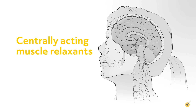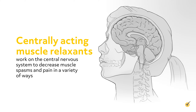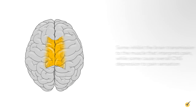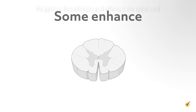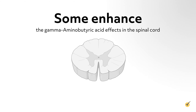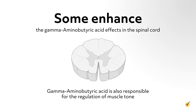Centrally acting muscle relaxants work on the central nervous system to decrease muscle spasms and pain in a variety of ways. Some inhibit the brain transmission to the muscle that interprets pain, while some cause overall CNS depression to pain sensation. Some enhance the gamma-aminobutyric acid (GABA) effects in the spinal cord, and GABA is also responsible for the regulation of muscle tone.